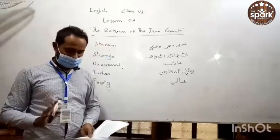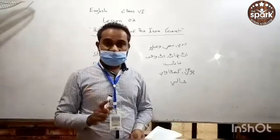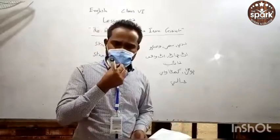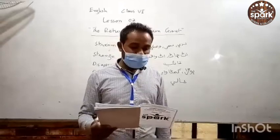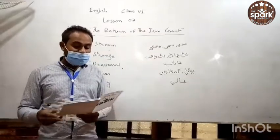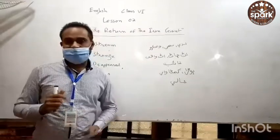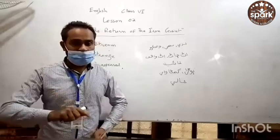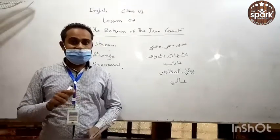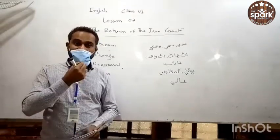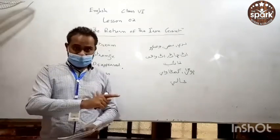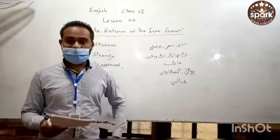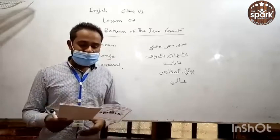So those were the words and meanings. Now there is the portion of questions and answers, and these questions and answers are also very easy. The first question written in your textbook, page number two, is: who was Hogarth and what was he doing in the evening? We are being asked about Hogarth, the boy whose character is written in our book. The answer is: Hogarth was the farmer's son. He was catching fish at the stream.